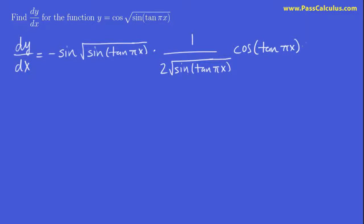So now I have to multiply by the derivative of tan pi x, which is secant squared pi x. And now I have to multiply the derivative of pi x, which is just pi.